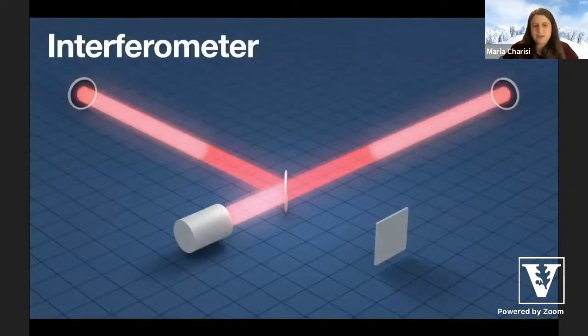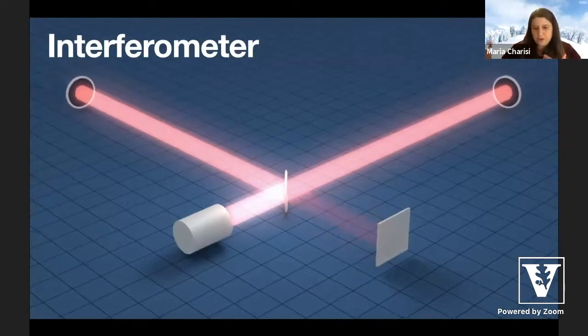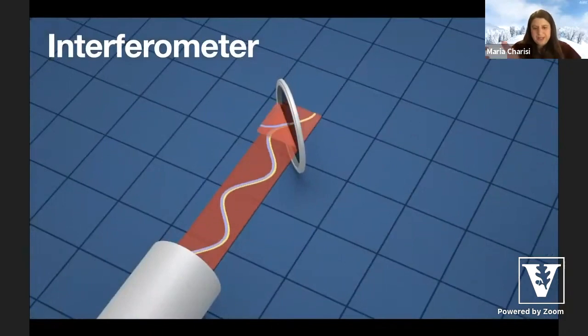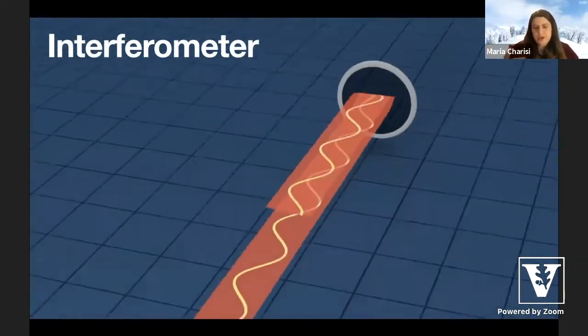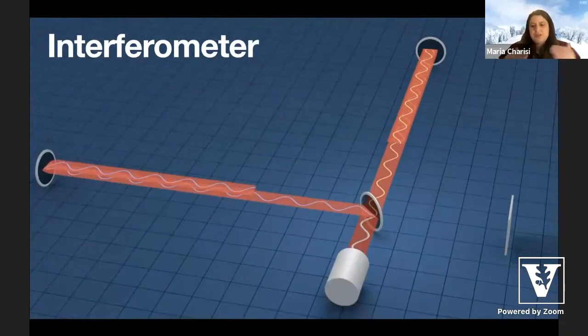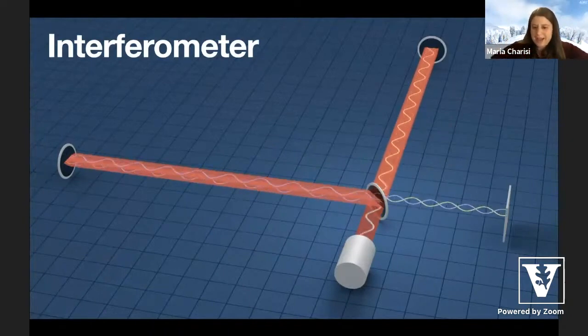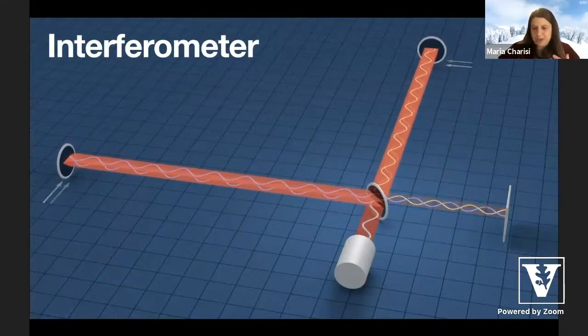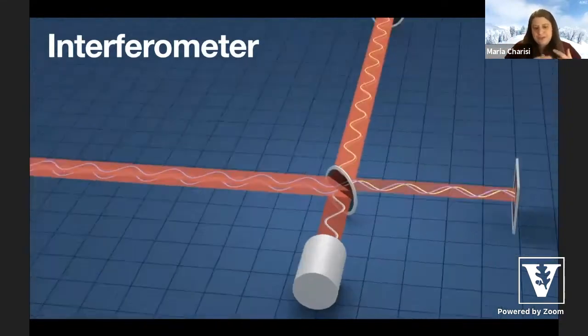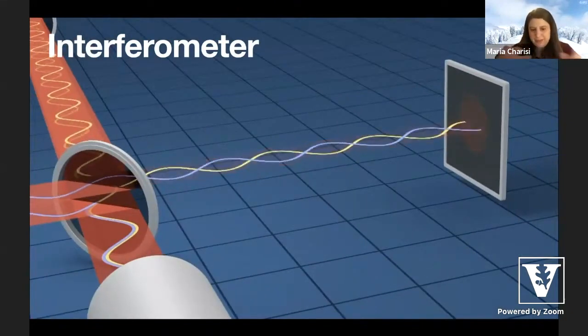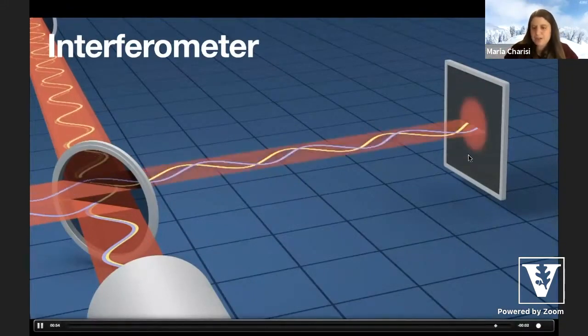So we built an instrument called an interferometer, which is an L-shaped detector. And it has two arms that are four kilometers long. So what happens is we have a beam of light that is split into the two arms of the interferometer. It moves four kilometers down, bounces off a mirror, and it comes back to the original splitter. So if the distances of the arms are four kilometers exactly, the light travels exactly the same amount in both arms, and they cancel when they come back. However, when we have a gravitational wave squeezing and stretching the arms, one arm will become longer, the other one will become shorter. So the light will have to travel a different distance, and they won't cancel when they come back. So we have a characteristic pattern that is happening here. And this is how we can detect gravitational waves.